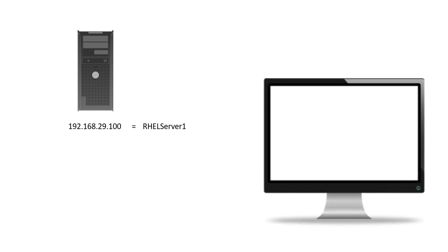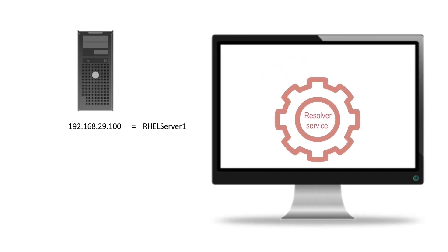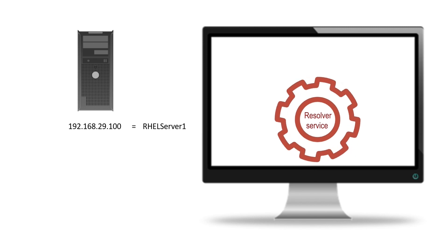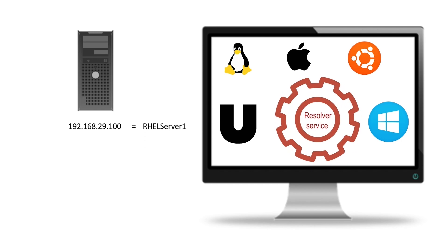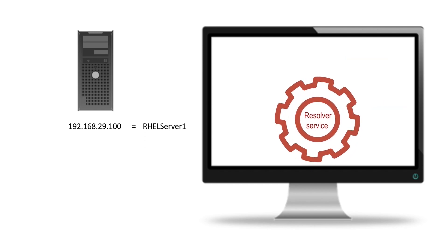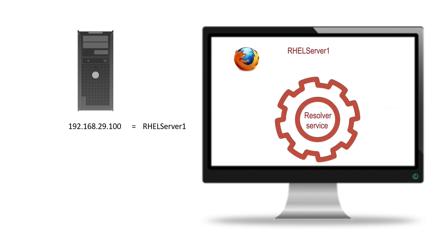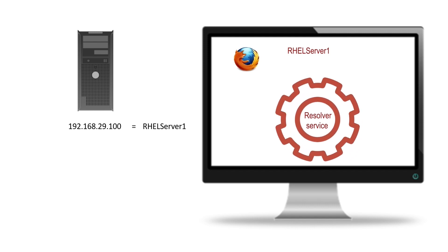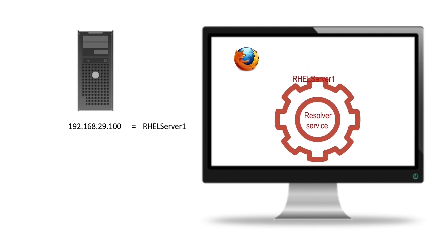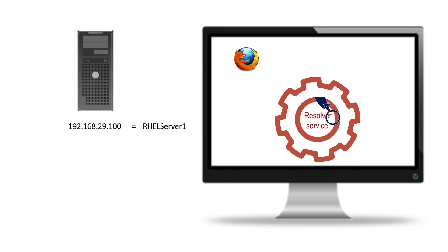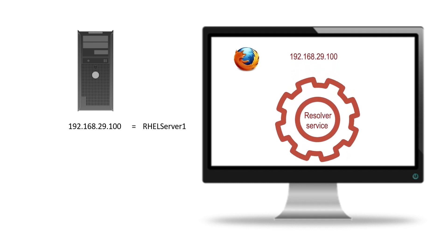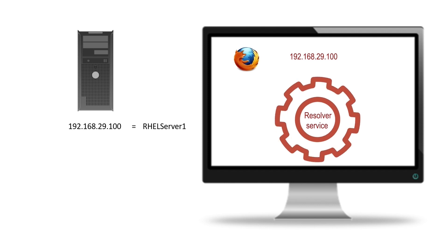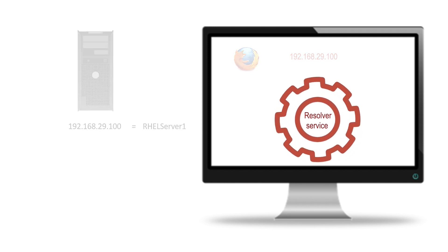Your system does not use the DNS service directly. It uses the DNS service through the Resolver service. By default, the Resolver service is available on all operating systems. Operating systems use it to translate names. When you access a network resource using its name, the application you use requests the Resolver service to translate the name into the IP address. The Resolver service checks all configured sources in a sequence until it finds the IP address associated with the name. Once it finds the IP address, it shares it with the requester application and does not check the next source in the sequence.